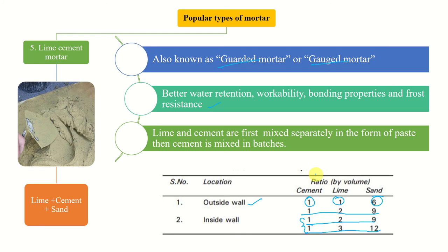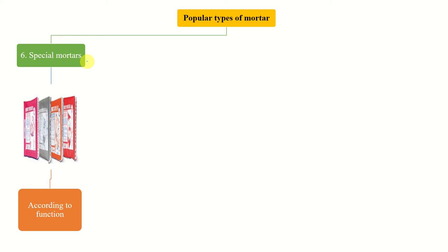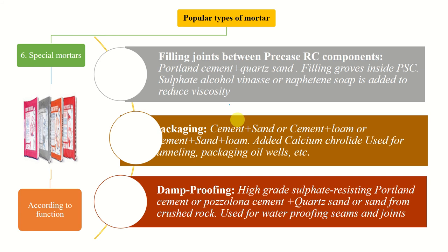The last popular type is special mortars, used according to function. For example, filling joints between precast reinforced concrete components — precast meaning the component is manufactured at a factory and transported to the site, such as the Hyderabad Metro Rail, where all segments were made at the manufacturing unit and transported to site.